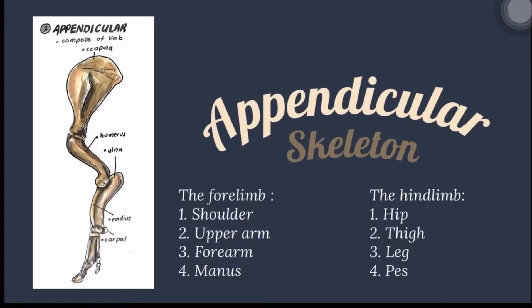The forelimb comprises the shoulder or the scapula, the upper arm or the humerus, the forearm or the radius and ulna, and the manus, which comprises the carpals, metacarpals, and the phalanges.